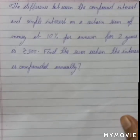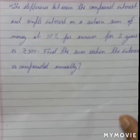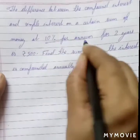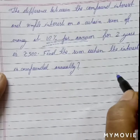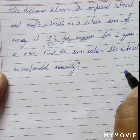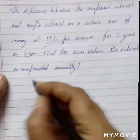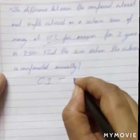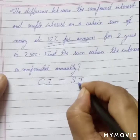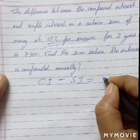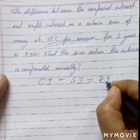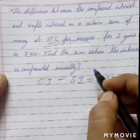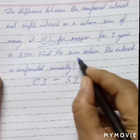The difference between the compound interest and the simple interest on a certain sum of money is 10% per annum, and the difference between the compound interest and the simple interest is Rs. 500. CI stands for compound interest and SI stands for simple interest, so the difference is Rs. 500. The question is: find the sum when the interest is compounded annually.